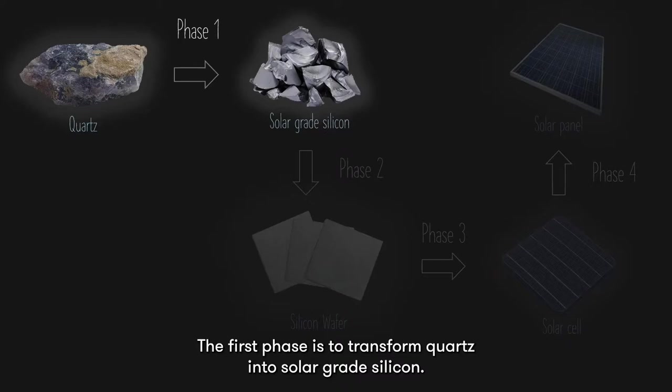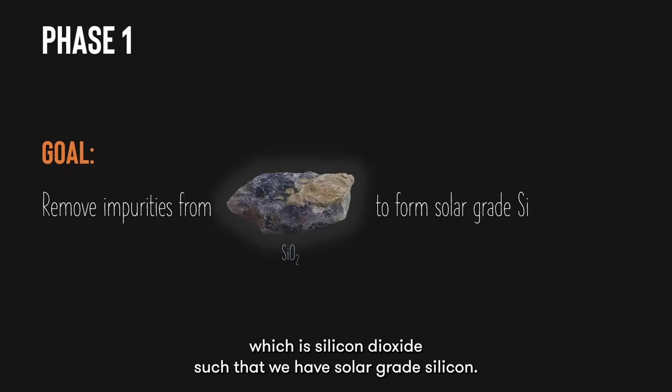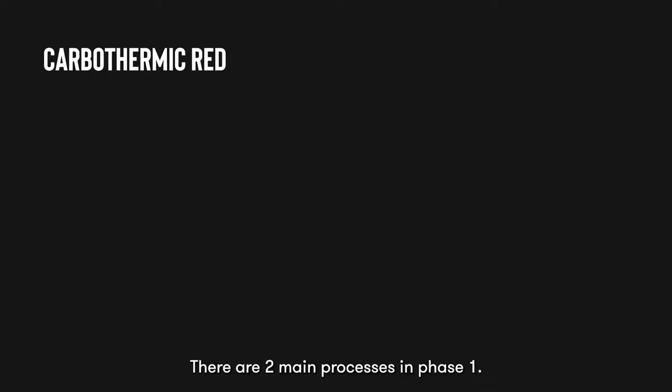The first phase is to transform quartz into solar-grade silicon. The goal of phase 1 is to remove impurities from quartz, which is silicon dioxide, such that we have solar-grade silicon. Any impurities may induce stress for defect-assisted recombination.